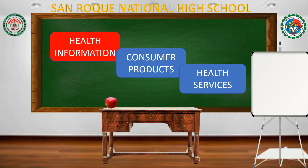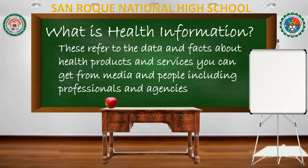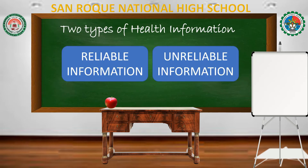Now let us go first to health information. Health information refers to the data and facts about health products and services. You can get it from media and people, including professionals and agencies. There are two types of health information: first is reliable information, and the other one is unreliable information.